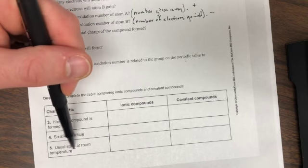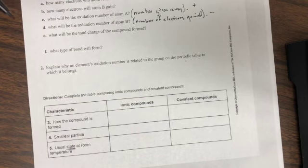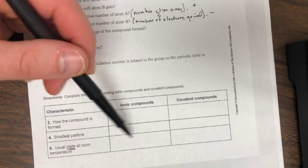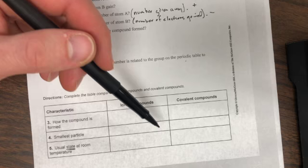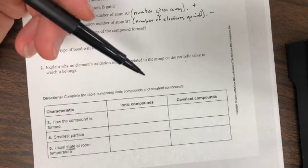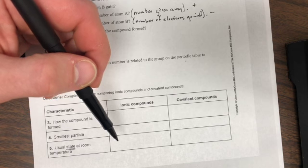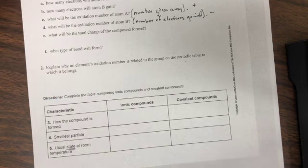Then, what state - when we say state we mean are they solids, liquids, or gases - are ionic compounds typically at room temperature? How about covalent compounds? You can look these up either in your book or you can look those up just on Google. All right.